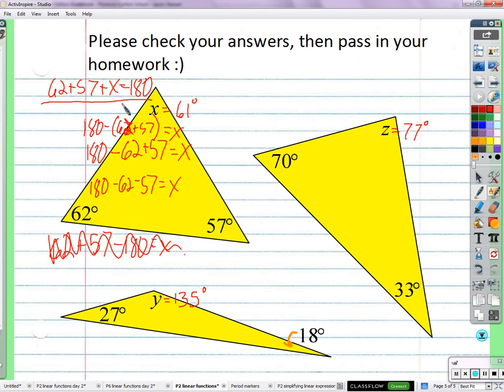So this one's correct. This one works, right? 61 does go in there for x and it will be true. If I add 61 plus 57 to 62, that side will be 180. This side will be 180. The equation will be true.